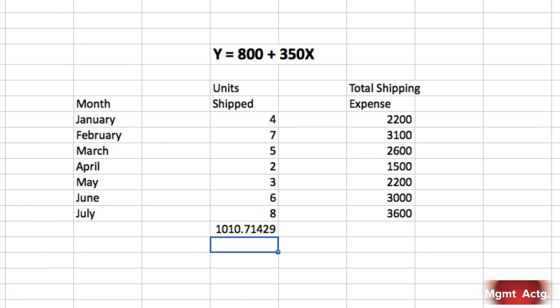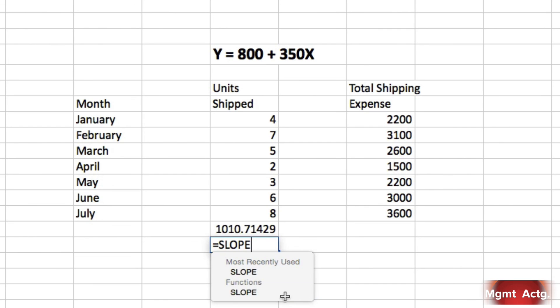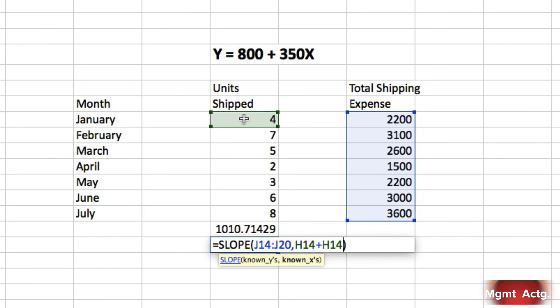Let's see what happens to our 350. Remember, that's our slope. So we type in slope, and I can click on this one. My brackets automatically show up for me. I just move my mouse over to the first y variable, drag down, hit comma, go over to the first x variable, drag down, hit enter. It's 317 instead of 350.